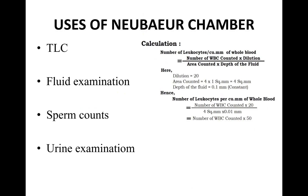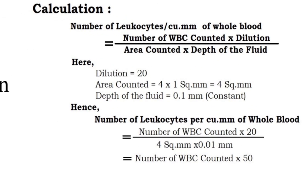For TLC — total leukocyte count — you add volume correction, meaning you add the depth, and also a dilution factor, which is usually 1:20. The formula is: number of WBCs per mm cube = WBCs counted × dilution factor (20), divided by volume (area × depth). For example, if you counted 110 WBCs: 110 × 20, divided by the volume. The area is multiplied by four because there are four corner squares, giving 4 mm squared, then you add the depth of 0.1 mm.